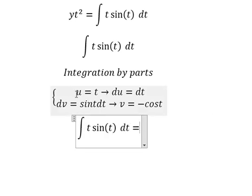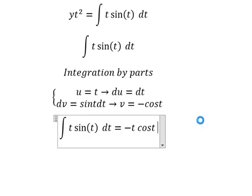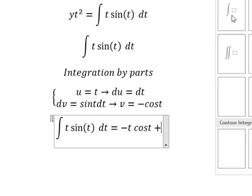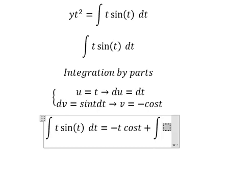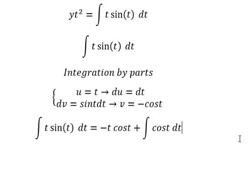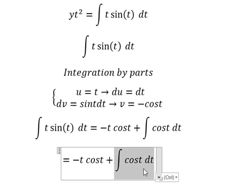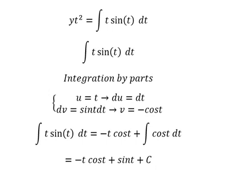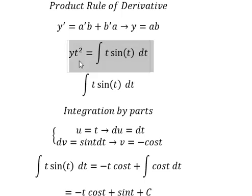So we have u multiplied by v, minus the integral of v times du. Negative times negative gives us positive, and now we have the integration of cosine t dt. The integration of cosine t is sine t, and I will add the constant C.